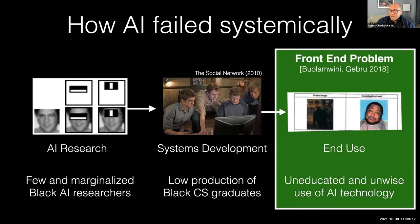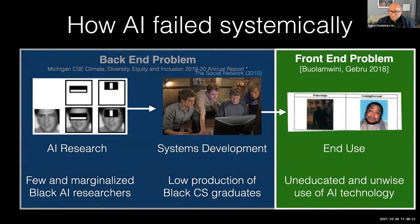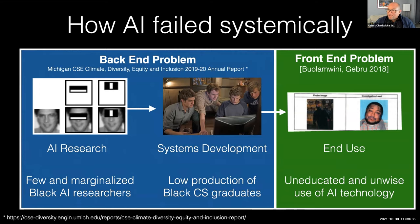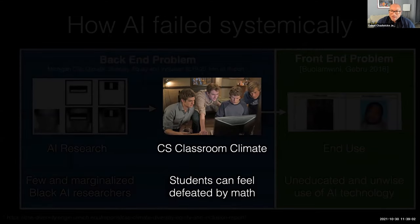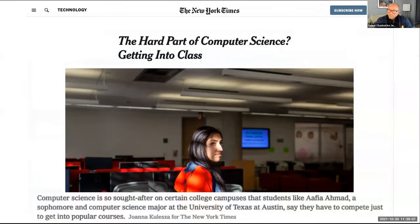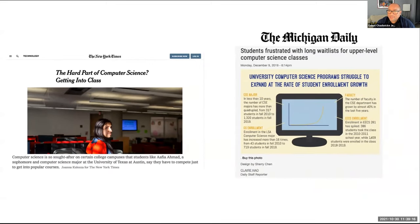When we think about algorithmic fairness, we talk about front-end issues — such as the gender shades work from a few years ago — but I think what we don't think about as much is the back-end problem: what are we doing in the classrooms and research labs that will produce a workforce leading to equitable outcomes? This is really an issue of our CS classroom climate. Students can feel defeated by math, and we really need to do something about this because the way we're still teaching has a 1990s mentality for computing and a 1960s mentality for math. We're starting to see this in computer science with the large national demand for CS graduates, which is driven by the high salaries coming out of a CS degree.